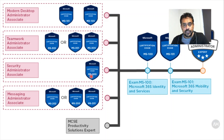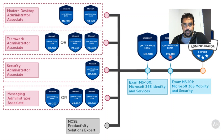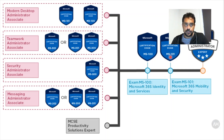Along with MS-500, you need to complete MS-100, which is Microsoft 365 Identity and Services, and MS-101, Microsoft 365 Mobility and Security. By completing these three exams you can become a Microsoft 365 Enterprise Administrator Expert. Now I'm going to cover the modules we'll discuss during this training.